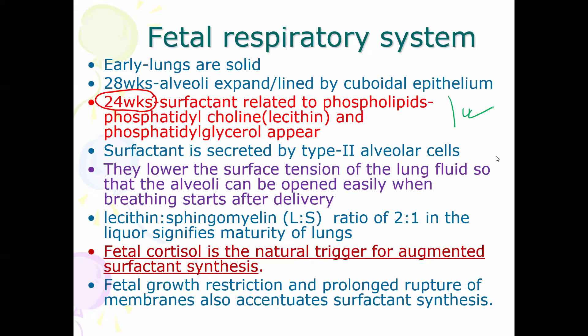Though surfactant first appears at 24 weeks, it is not adequate until 34 to 36 weeks. Before 34 weeks, if we need to deliver the baby, we have to give steroid medications — dexamethasone or betamethasone — which expedite the formation of surfactant. Surfactant is secreted by type 2 pneumocytes, also called type 2 alveolar cells, and it lowers surface tension so that the alveoli can open easily.